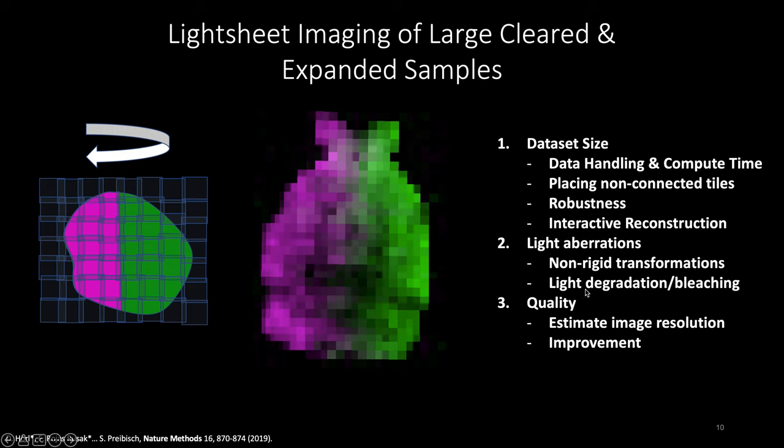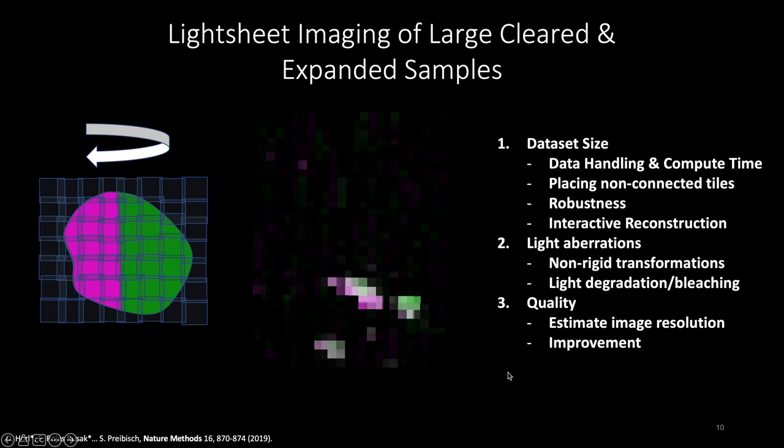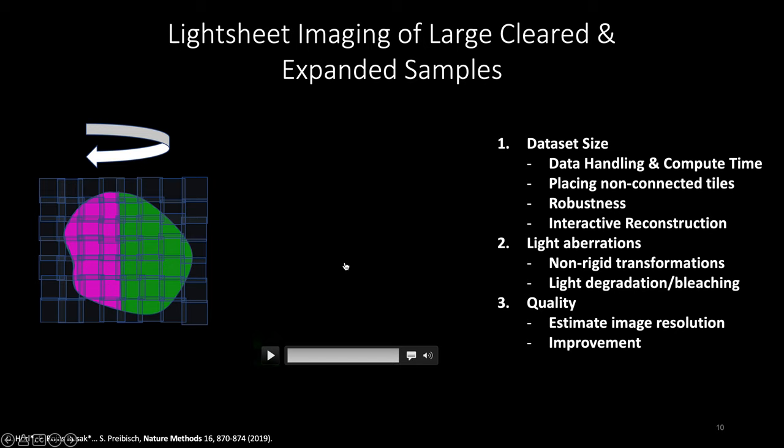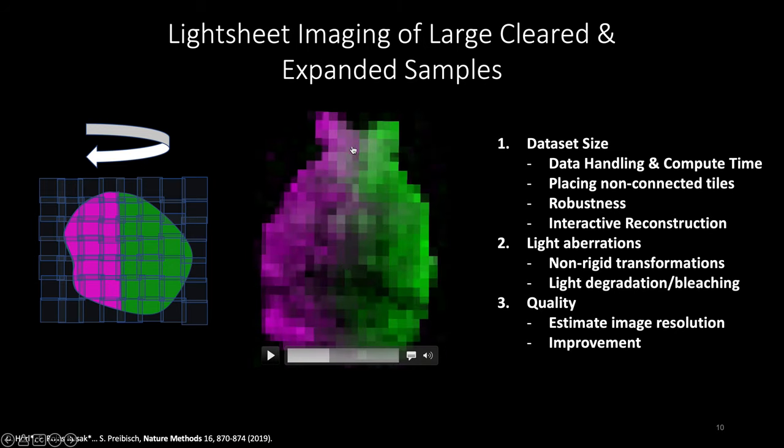It can handle light aberrations, simple things like illumination, site detection, but also chromatic aberrations and even non-rigid deformations that occur because light is refracted as it goes through the sample. Another really cool thing is quality control. It allows you to estimate image quality at any point in the sample, which helps you assess whether the clearing worked everywhere and if acquisitions worked everywhere. At the end it fuses this into one gigantic stack that you can analyze with whatever tools you want: deep learning, manual segmentation, and so on.